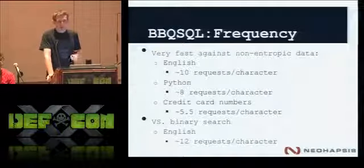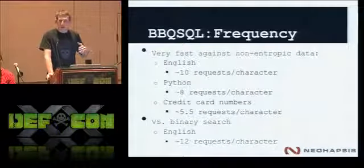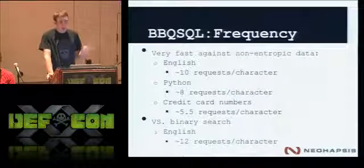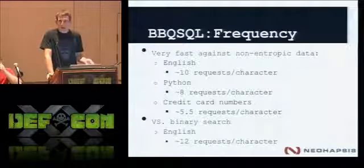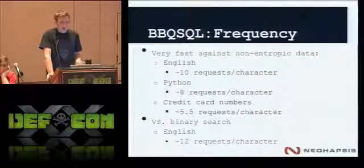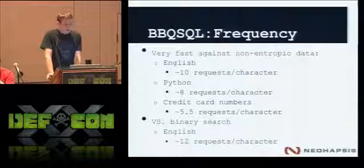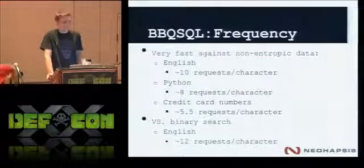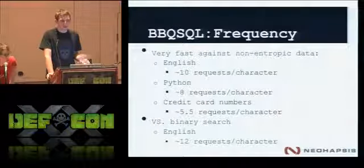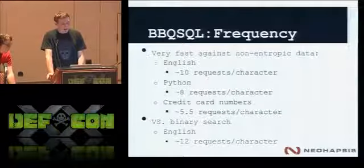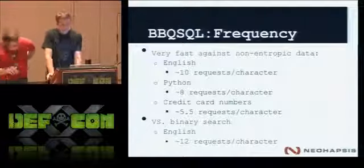With English text, I was getting about 10 requests per character. Python code, which is more structured, saw even better performance at 8 requests per character — I was trying to dump the whole Django source code. Credit card numbers: about 5.5 requests per character, which is kind of funny because with a normal linear search you'd expect 5 exactly, so not quite as good. But when you compare to a binary search with English, you get 12 requests per character, so the frequency approach gives a slight performance improvement.